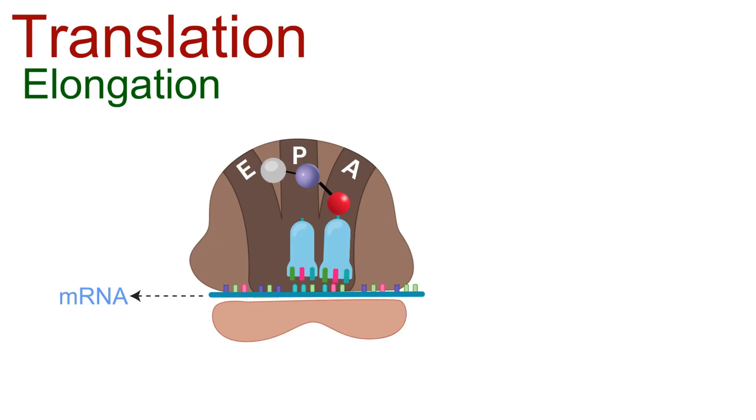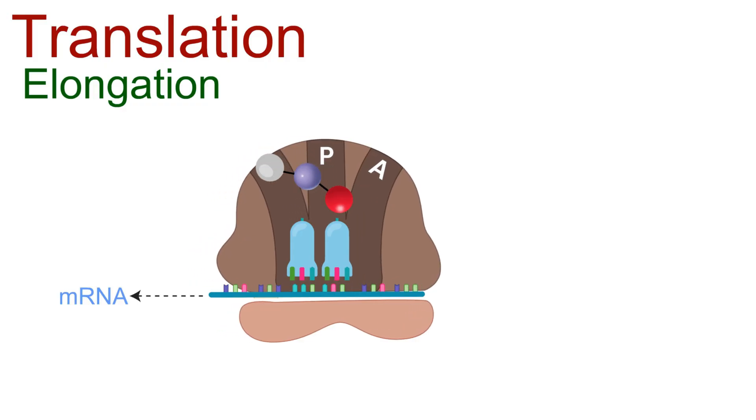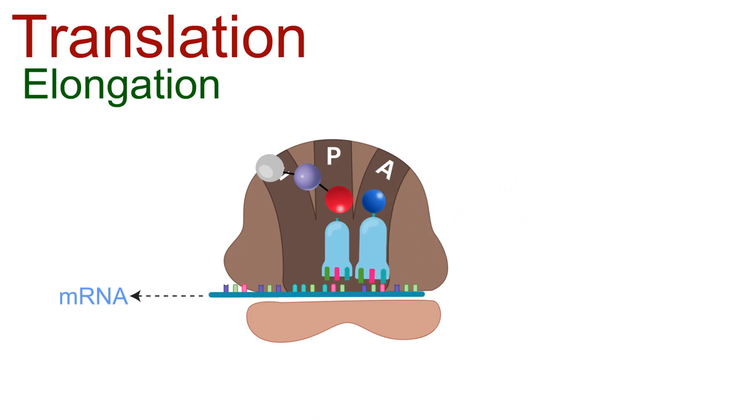This cycle—codon recognition, peptide bond formation, and translocation—repeats over and over, causing the polypeptide chain to grow longer with each round.